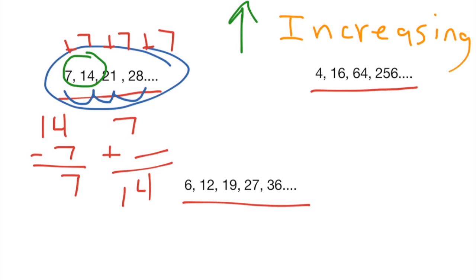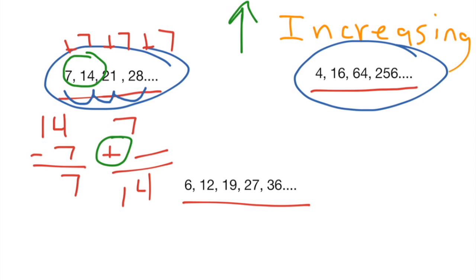When you see a growing pattern where the numbers are just going up by a small amount each time, one thing you can usually refer to is addition. When you see that small increase each time, you're probably adding something, so that's a good first place to check. The second type of pattern we're going to look at is an increasing pattern that seems to go up really, really quickly. Notice we go from 4 to 16 to 64, all the way up to 256. Our numbers are increasing at a really large rate.